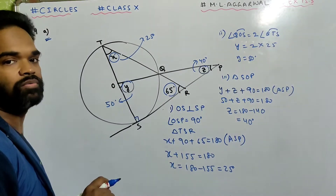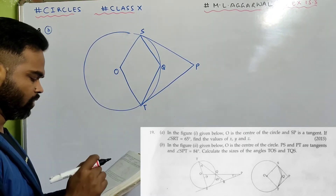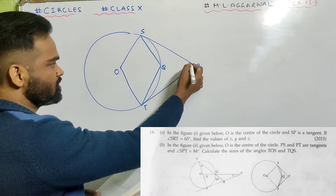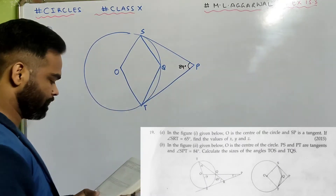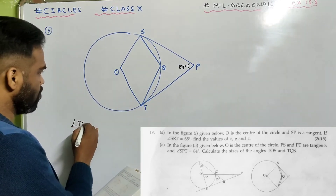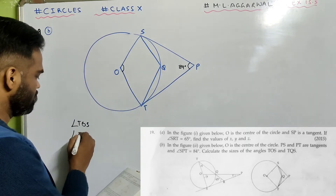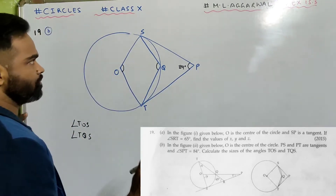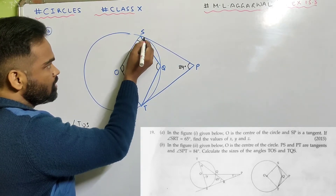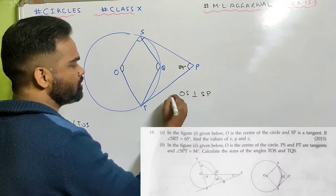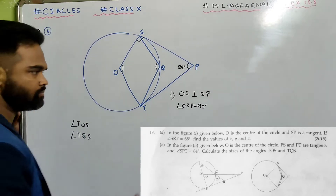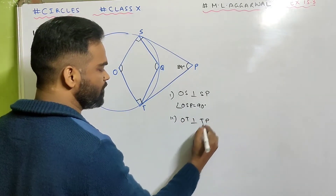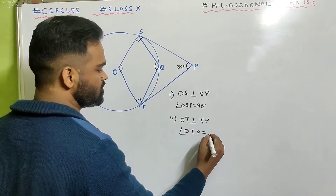Now look at sum 19 part B. In the figure given below, O is the center of the circle. PS and PT are tangents and angle SPT is given as 84 degrees. Calculate the size of angle TOS and angle TQS. SP is the tangent and OS is the radius, so angle OSP is 90 degrees. Similarly, PT is the tangent and OT is the radius, which means OT is perpendicular to TP, so angle OTP is 90 degrees.